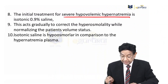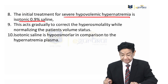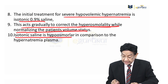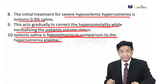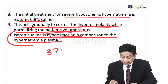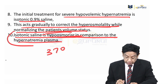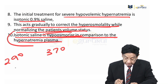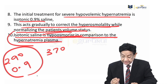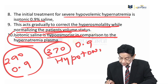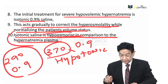The initial treatment for severe hypovolemic hypernatremia is 0.9% isotonic saline. This gradually corrects the hyperosmolality while normalizing the patient's volume status. Isotonic saline is hypo-osmolar in comparison to the patient's hypernatremia — this is a very important point. Our patient has an osmolality of 370; normal osmolality is 280 to 300. Now 0.9% saline is isotonic to 290, but 0.9% is hypotonic to 370. This is a very important point.